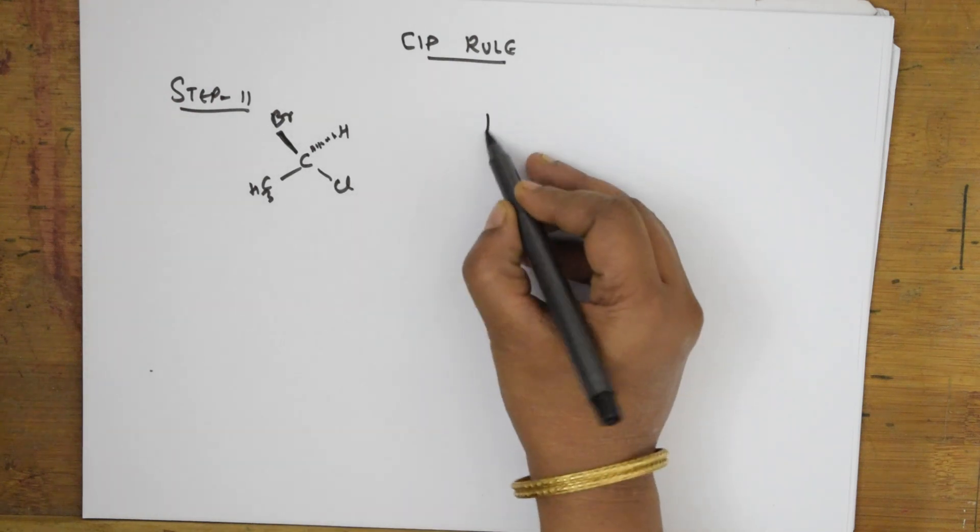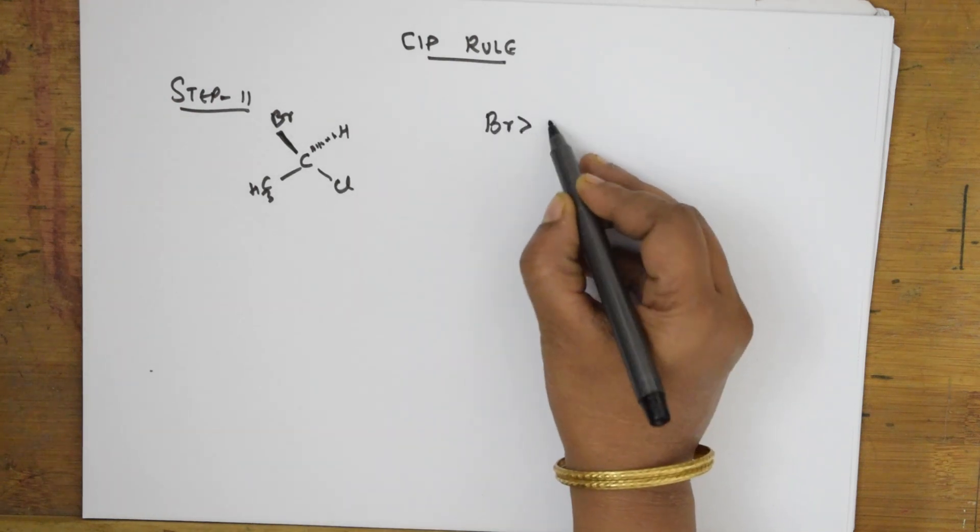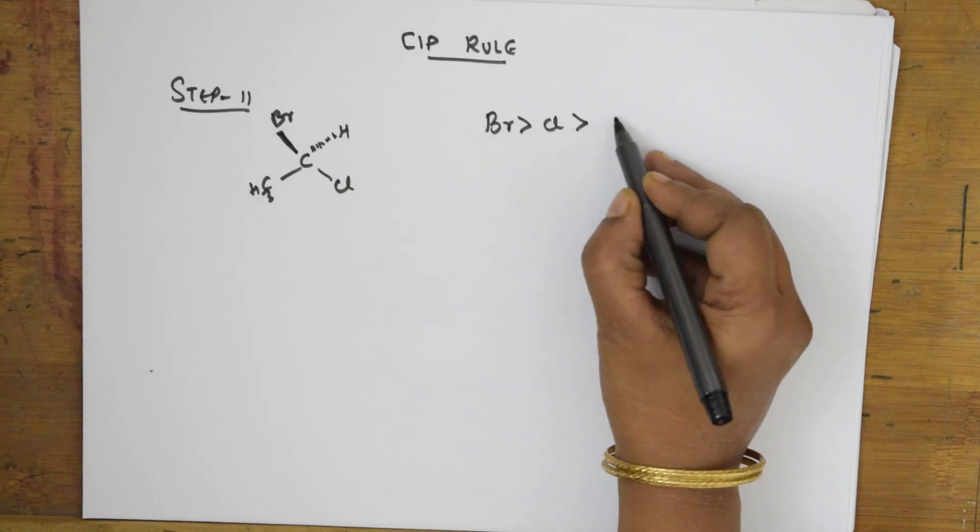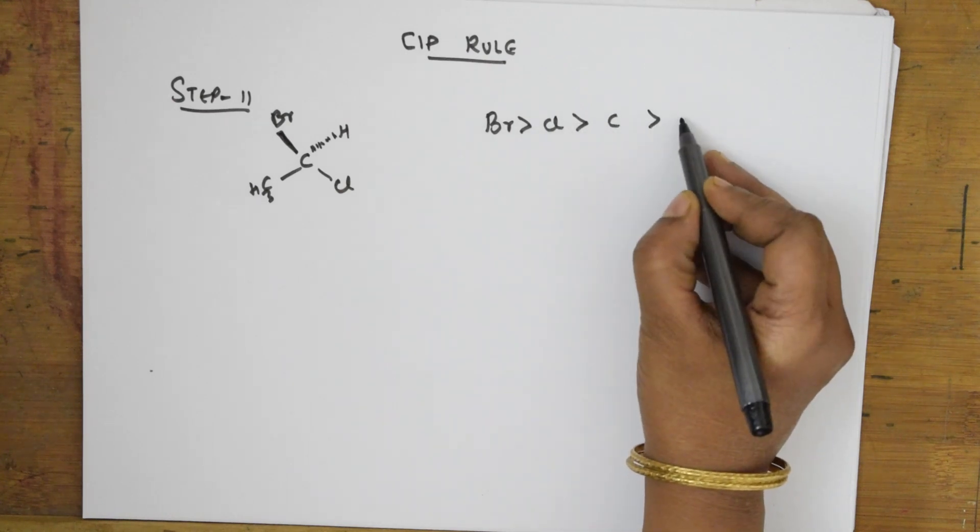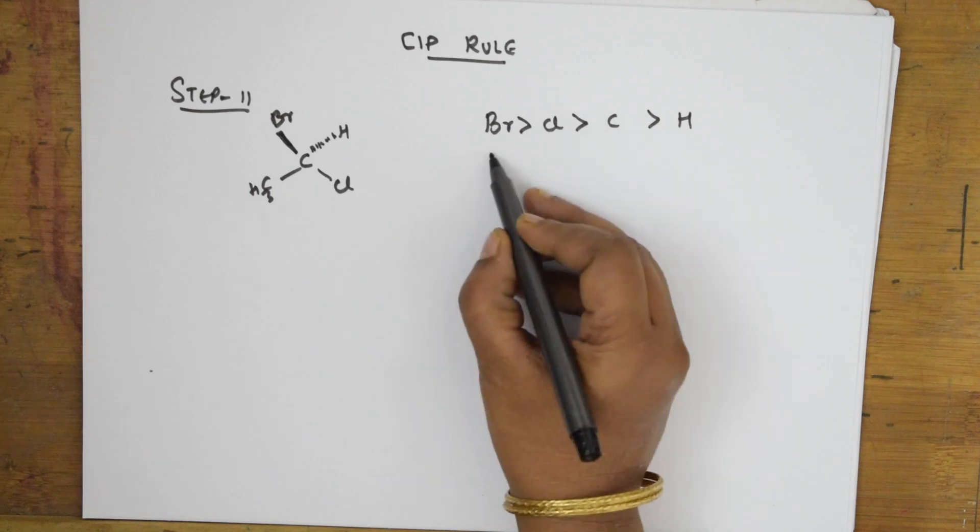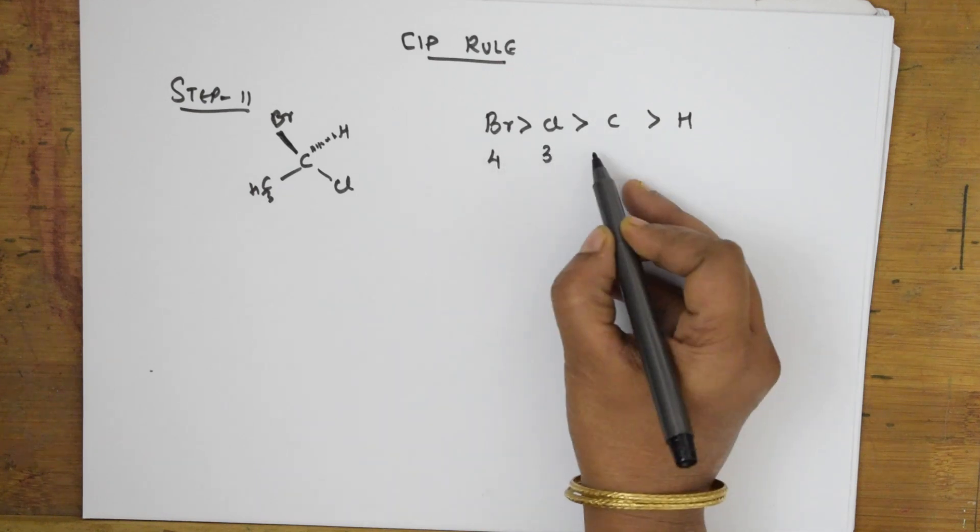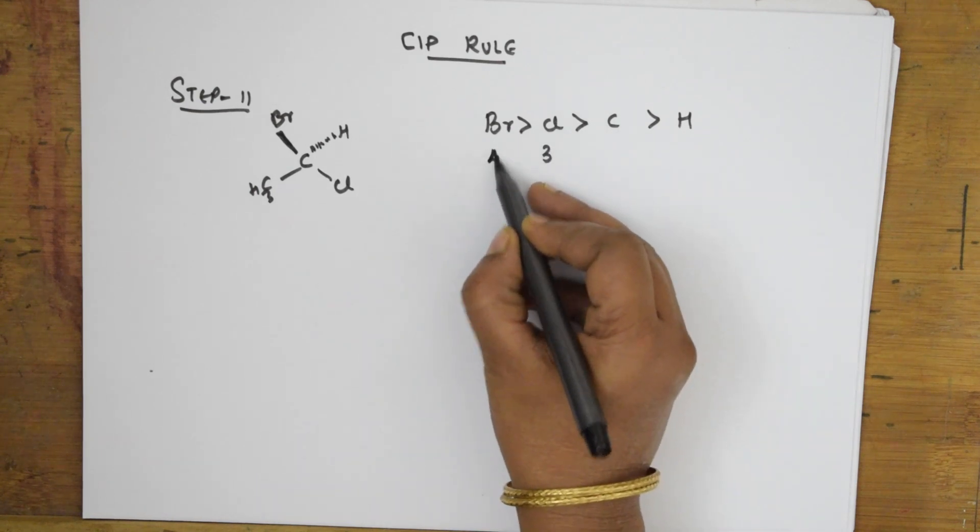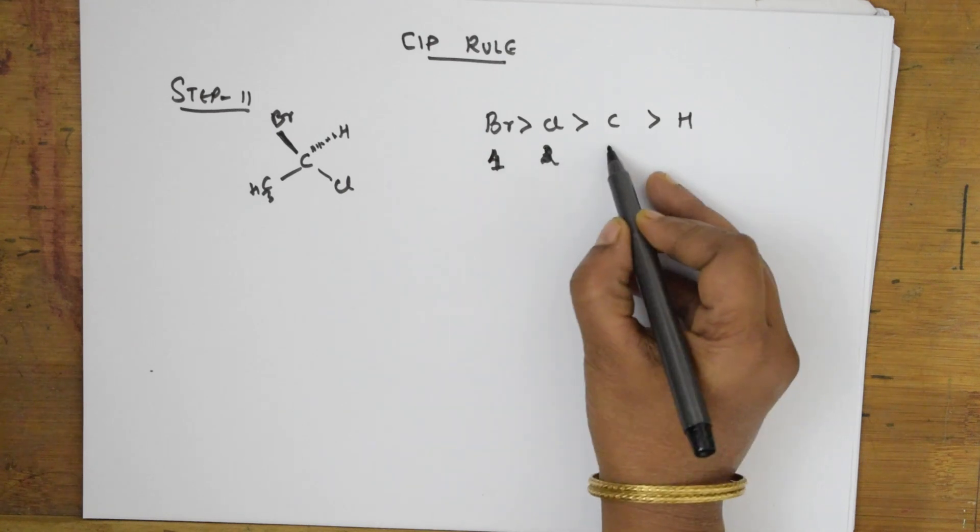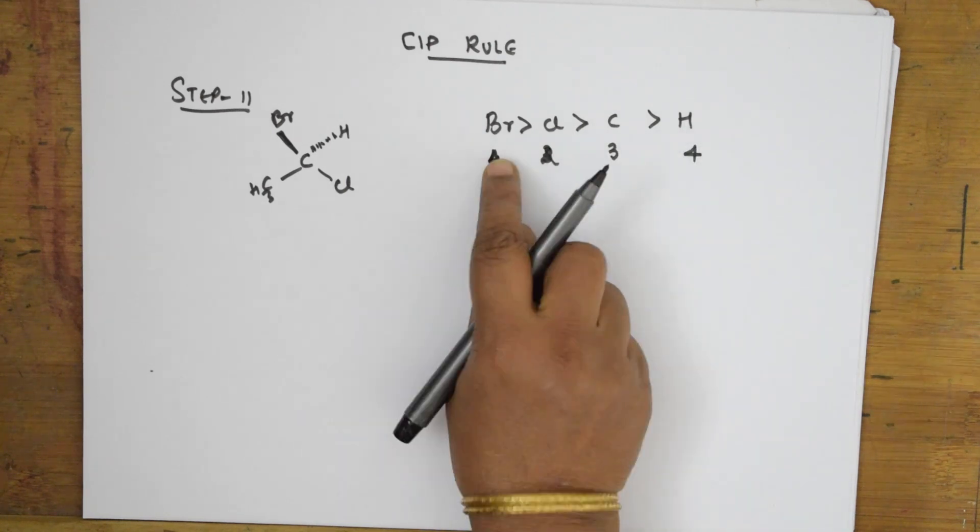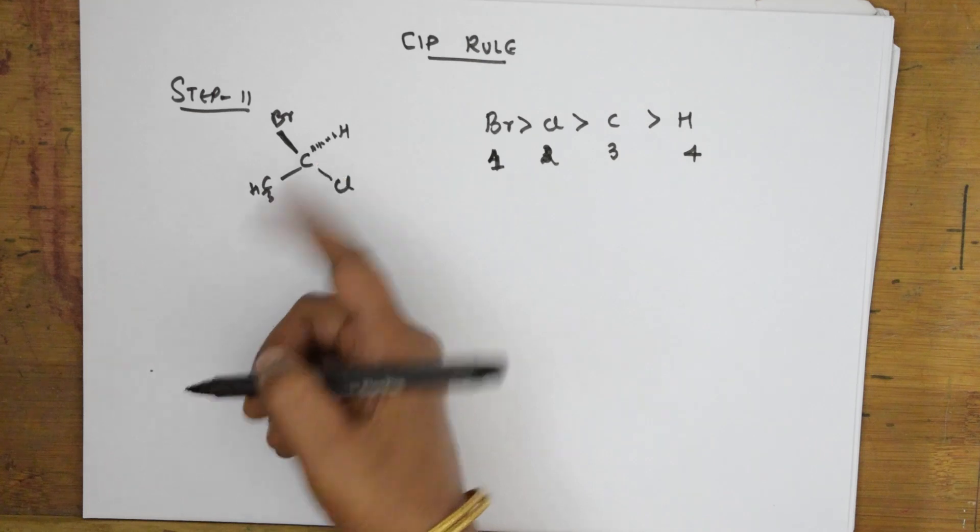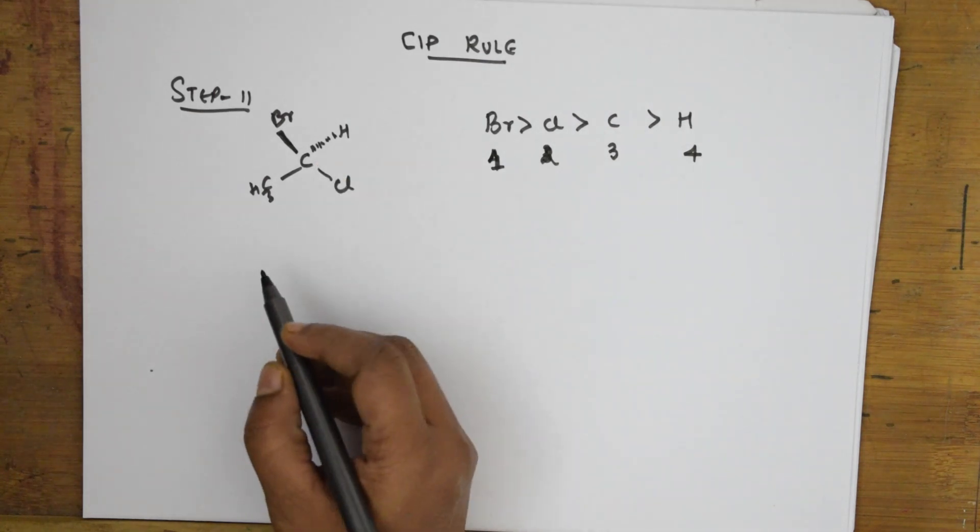According to the atomic number, bromine is greater, then chlorine is greater than carbon, which is greater than hydrogen. So this is number 1, this is 2, this is 3, and this is 4. The maximum atomic number is named first.